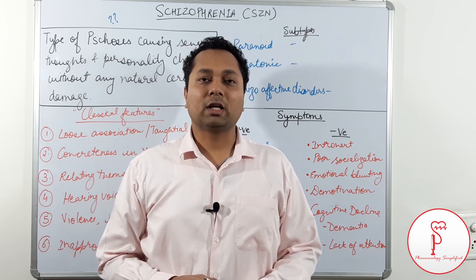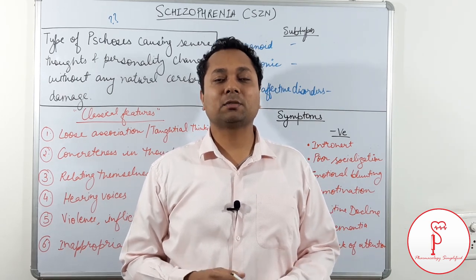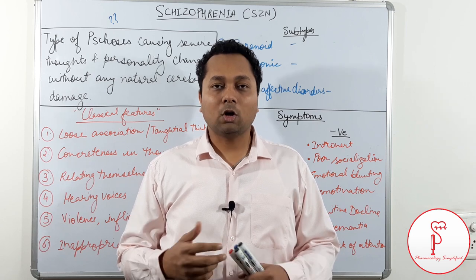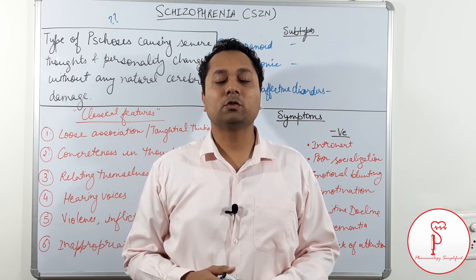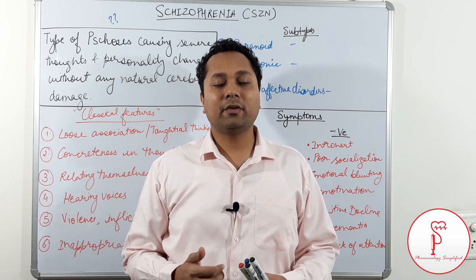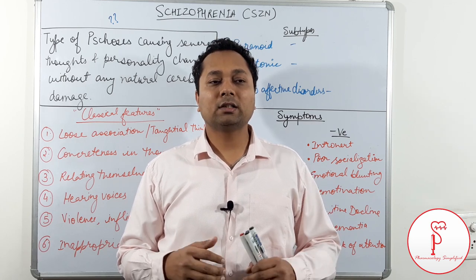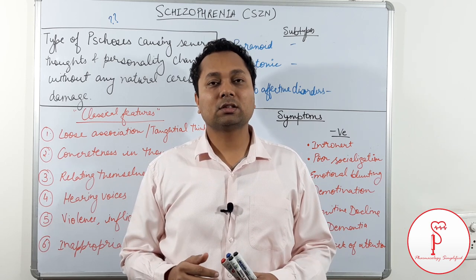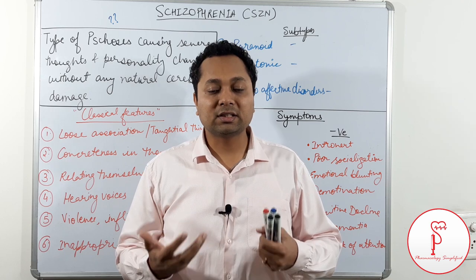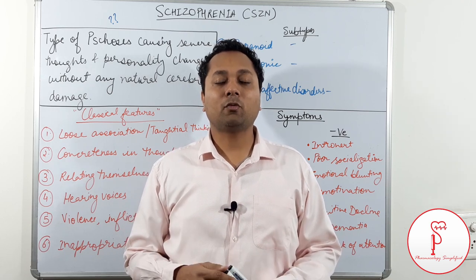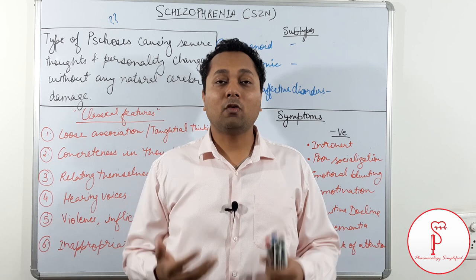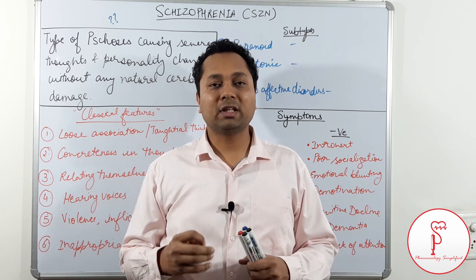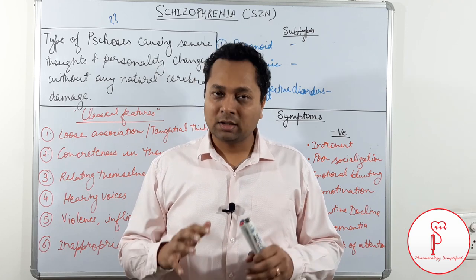When we talk about schizophrenia, it's a serious mental condition in which there are severe abnormalities in the thought process and in the personality of an individual. The individual tends to have inappropriate behavior, inappropriate emotions, and they feel like they have certain superpowers because they get hallucinations — hearing certain voices, someone talking to them — and they often have very negative thoughts, like they have been discriminated against or someone is trying to do bad to them.